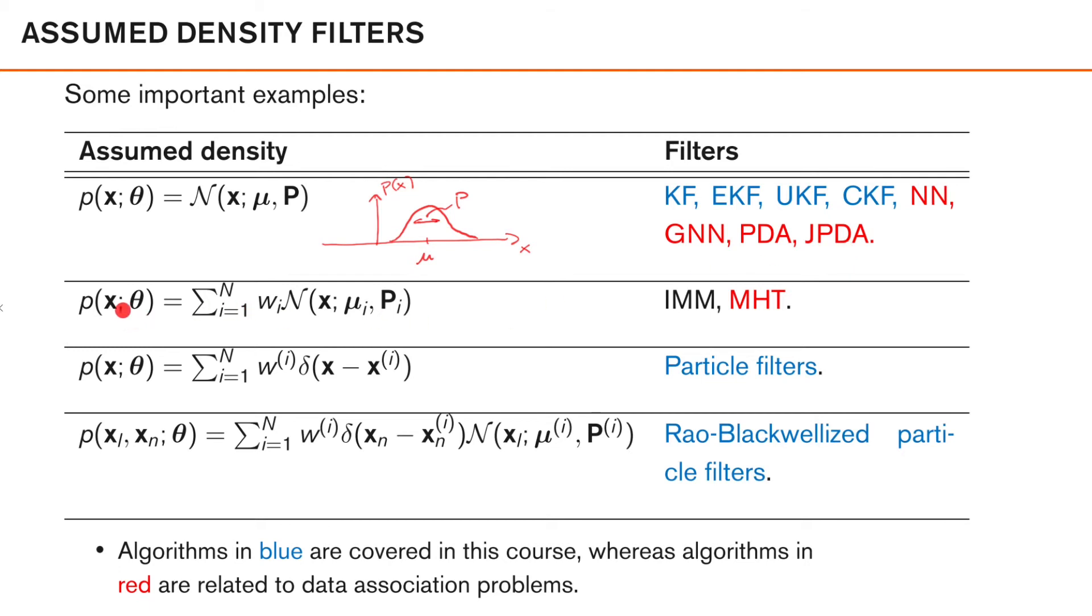Another alternative that is quite common is to assume that our densities can be described as a weighted sum of Gaussians, where we have a sum of capital N Gaussians that are all weighted by these weights wi, which can look something like this. In the case where we have three Gaussians in our mixture, all with its own weight w1, w2 and w3. N here is usually not that large, typically in the single to double digit range. We typically want to use this type of representation when we have some discrete random variable in our state. For example, this could be the class of an object. The weights w then represent the probability mass function of our discrete random variable, and the Gaussian densities would represent our continuous states conditioned on our discrete random variable. Examples of filters that use this type of parameterization is the interacting multiple model filter and the multi hypothesis tracking filter.